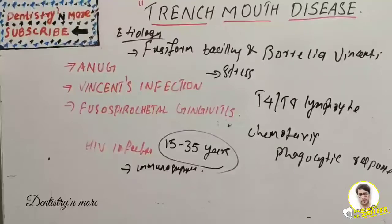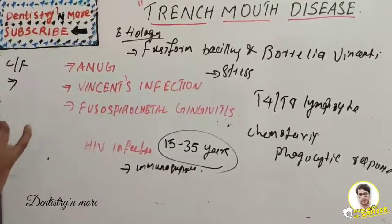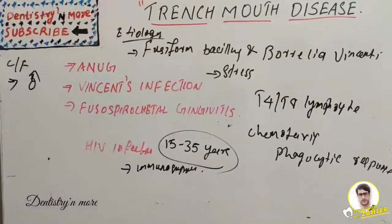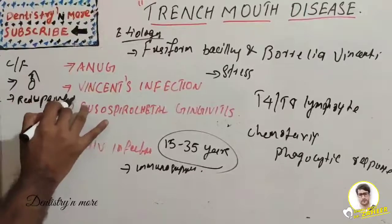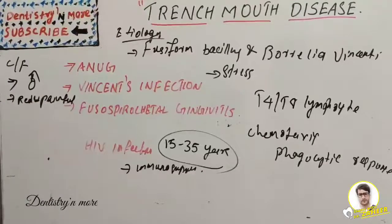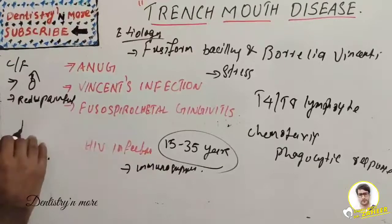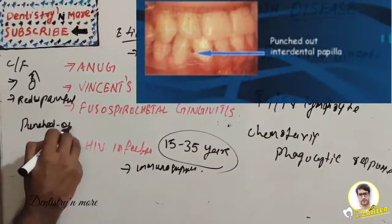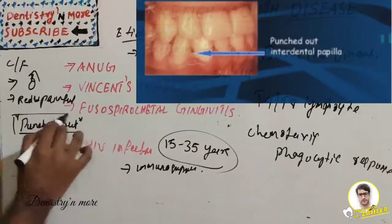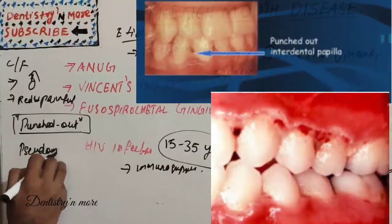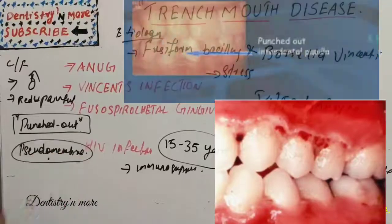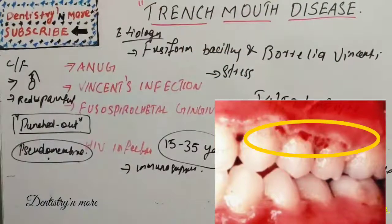Regarding clinical features, the condition is more commonly seen in males. The gingiva becomes red and painful. The most characteristic feature is a punched-out erosion of the interdental papilla. The gingiva is often covered by a pseudomembrane — which is why the condition was described by those two hallmark terms: pseudomembrane and punched-out erosion.